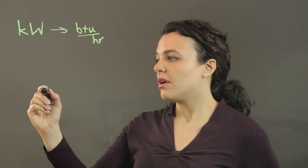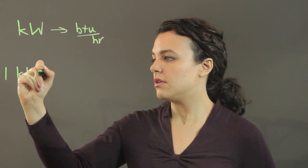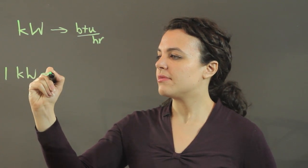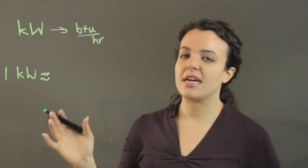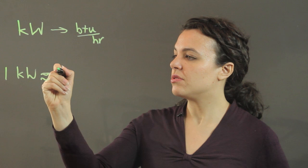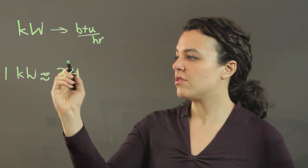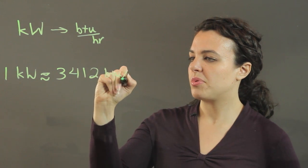Now, one kilowatt is roughly equal to 3,412 BTUs per hour. I'm using a squiggly equals sign because I've rounded a bit and it's not exactly equal.